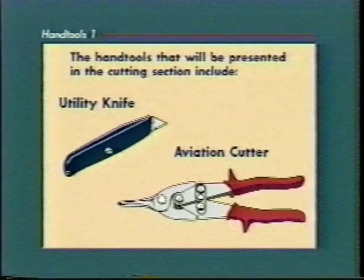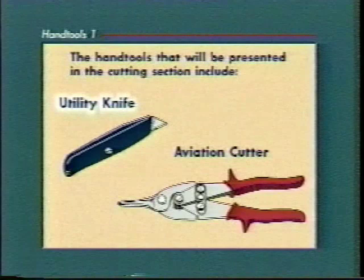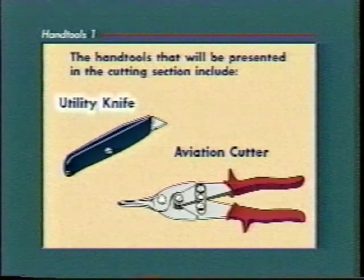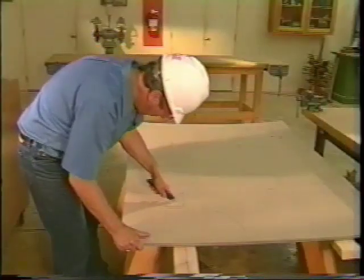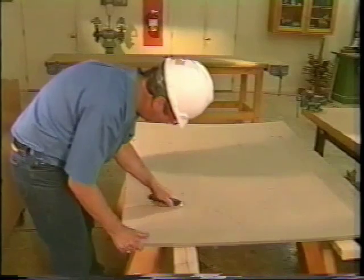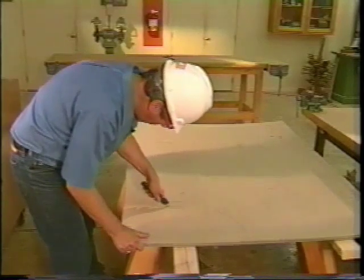Upon completion of this unit, the trainee will know how to use a utility knife and aviation cutters to cut a variety of construction materials. Use a utility knife to cut carpet, insulation board, and other materials requiring a clean edge or to mark fine lines.